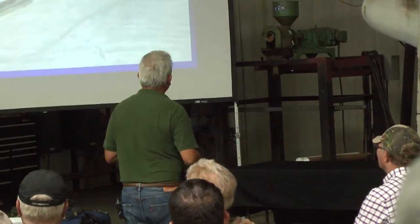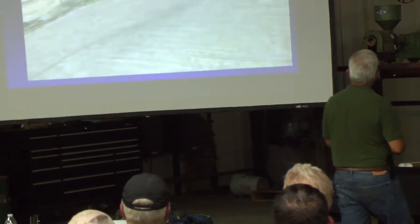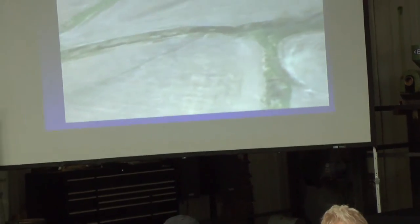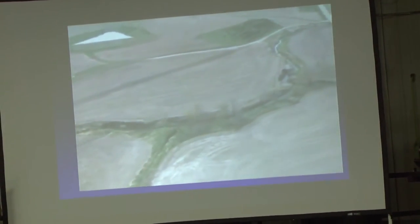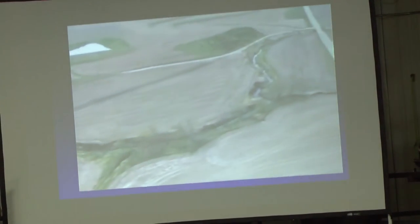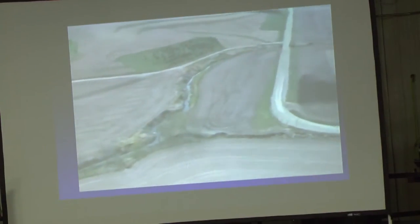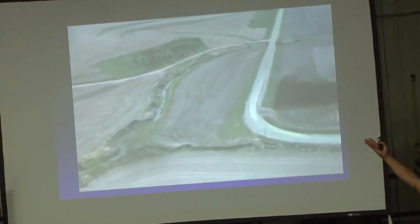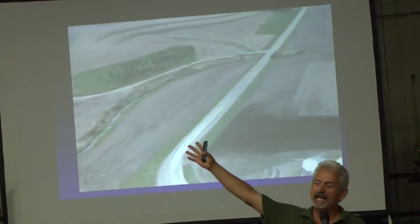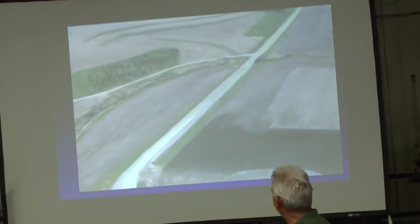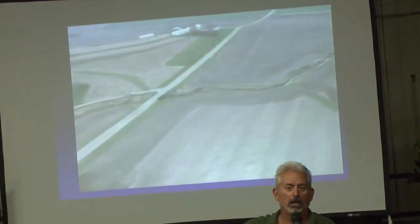This video was recently taken of Iowa. We are losing five to fifty tons of topsoil per acre in Iowa. We're supposed to be the beacons of hope for erosion control. We've had the NRCS for 75 years and this is how Iowa looks.